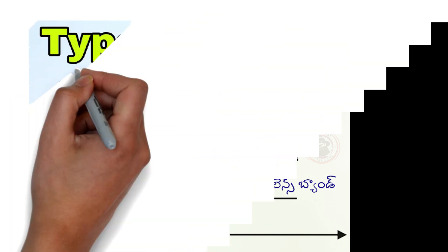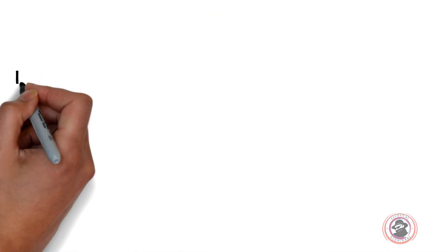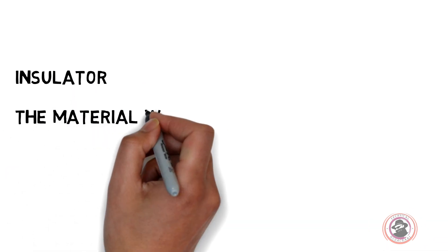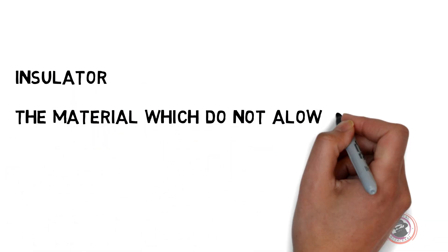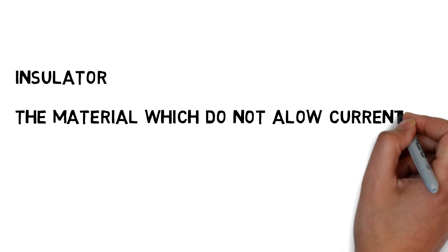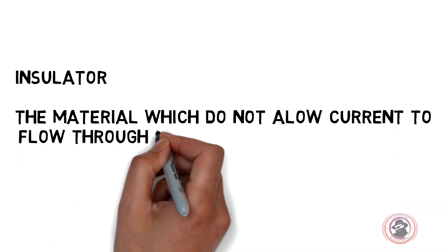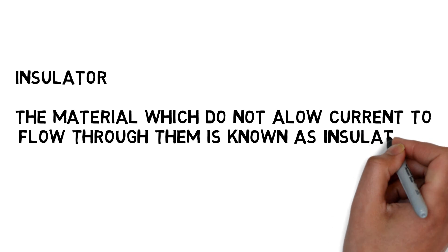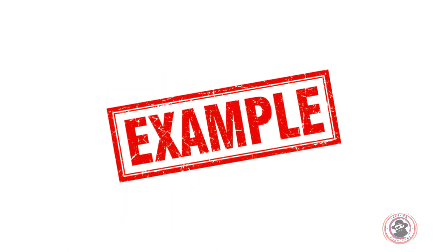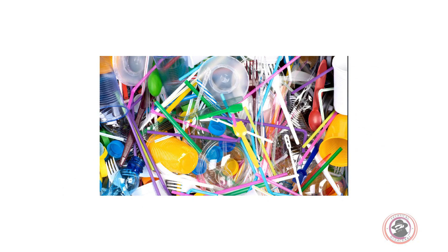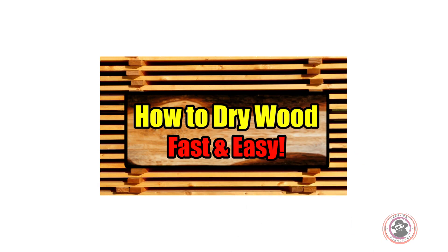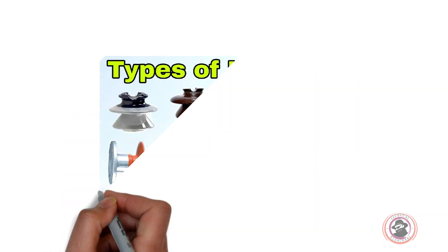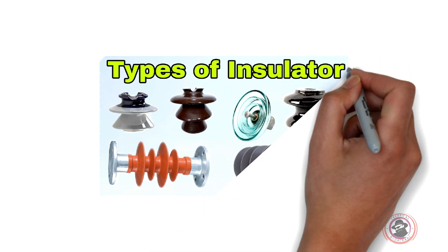Now we are going to talk about the insulator. The material which does not allow current to flow through them is known as the insulator. Examples include plastic, rubber, dry wood, and PVC.